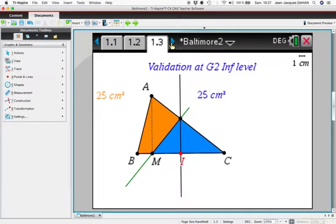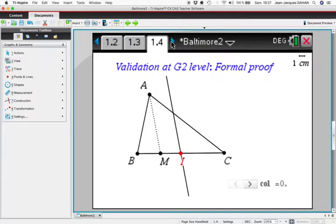What about the proof? For the proof it's very easy. We construct AM, and M can be constructed here, and the line passing through I, the parallel line to AM.